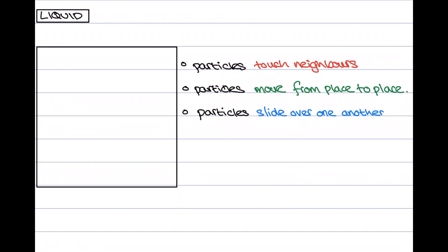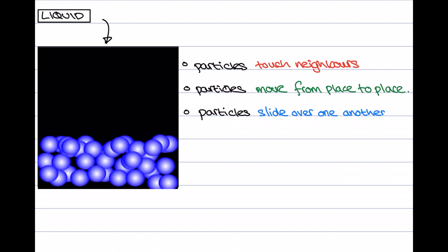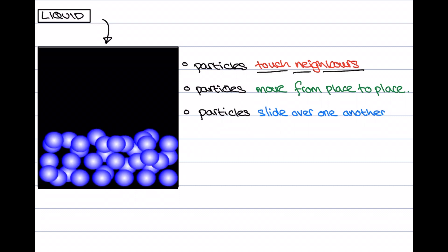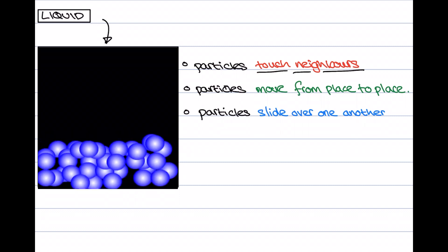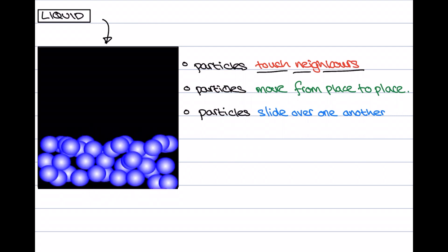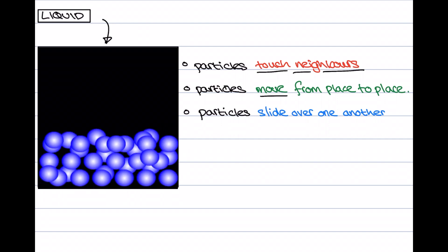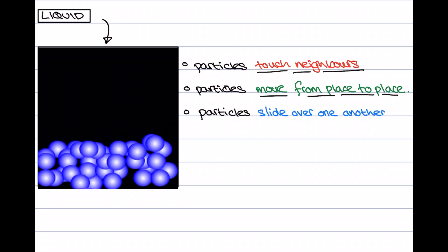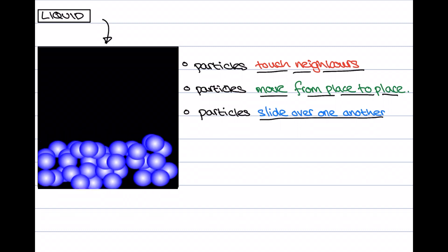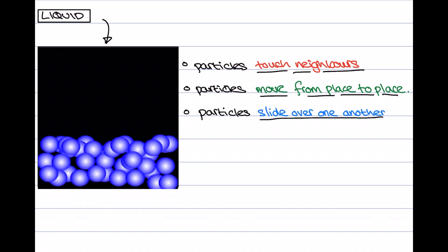Moving to the particles in a liquid: the first thing you'll notice is that they are again touching their neighbours, so they're all relatively close to one another — again explaining why we cannot compress the particles in a liquid, because we can't make them go any closer. But what's different about the liquid is that the particles can actually move from place to place, sliding over one another. This explains why the liquid cannot hold its own shape, and also why it flows.